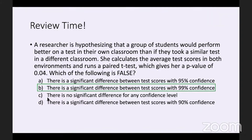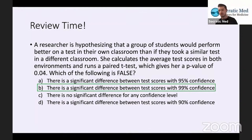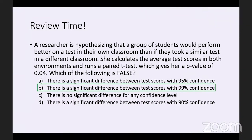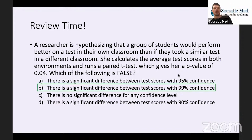The instructor acknowledges the student is absolutely right — C is also a false statement and therefore also a correct answer to the question. The instructor notes the question was misworded and will fix it. C says there is no significant difference for any confidence level, but we showed there is a significant difference at the 95% confidence level. The instructor agrees the wording needs to be corrected.